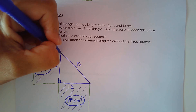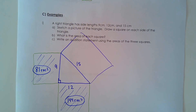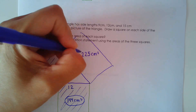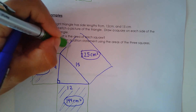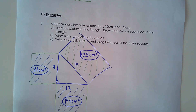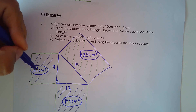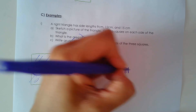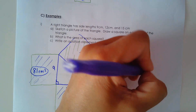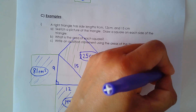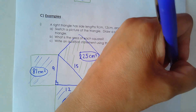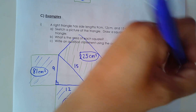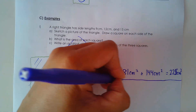And this area here should be 15 times 15, which is 225 centimeters squared. That answers question B — the area of each square. For question C, write an addition statement using the areas of the three squares: 81 centimeters squared plus 144 centimeters squared equals 225 centimeters squared. That is our addition statement.